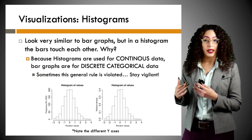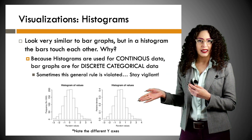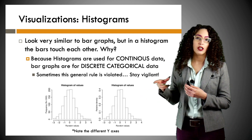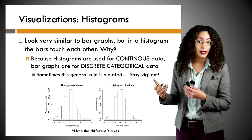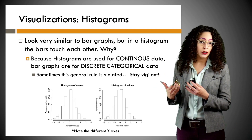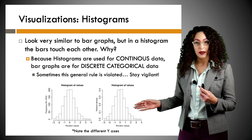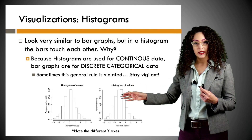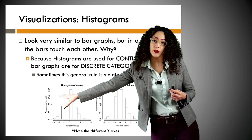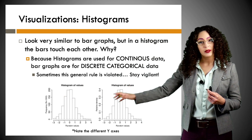And now here we have histograms. Now you might be saying they look exactly the same. The difference is that histograms are used for continuous data, while bar graphs are for discrete or categorical data. So if we look here, we have a nice histogram of some normally distributed data. The only difference between these two is that one is the frequency, or the count, and one is the relative frequency.